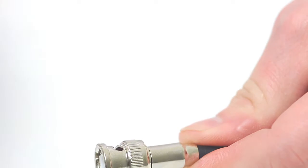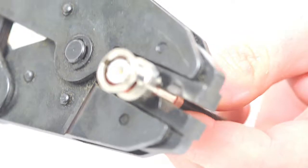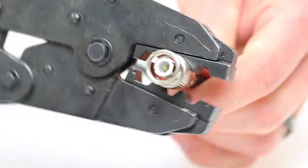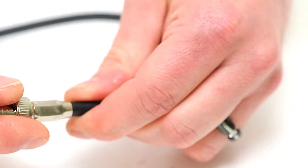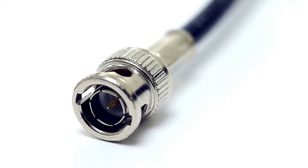Take your crimp tool and crimp the ferrule onto the jacket. This will create a secure connection. Give it a tug for testing to make sure it's properly seated. Now you've successfully terminated a BNC male two-piece connector.